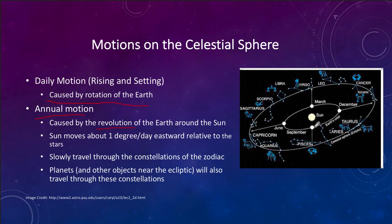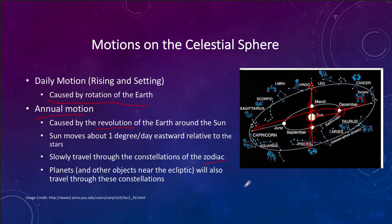When we are at one location in our orbit, we see the sun against certain constellations; three months later we see it against different constellations. That means the constellations visible at night will be different. These are what we call the constellations of the zodiac. The zodiac constellations are important because they are the ones the sun passes through. Planets and other objects near the path of the sun — near the ecliptic — will also pass through those constellations.